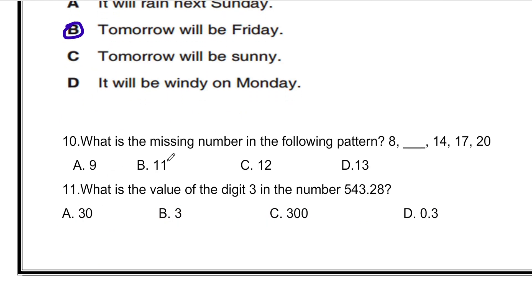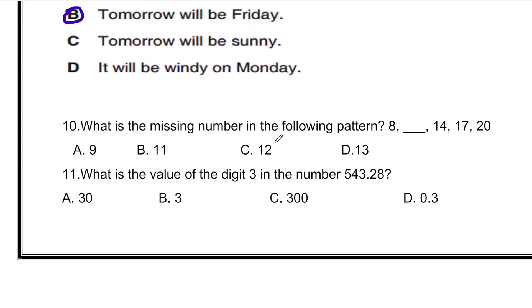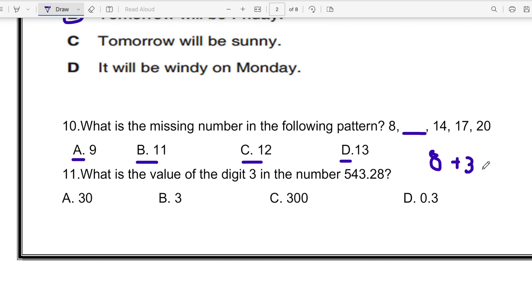What is the missing number in the following pattern? 8, 14, 17, 20. So we do not know what will come over here. We know it is 8, then 14. What is the missing number in the following pattern? 9, 11, 12, or 13. So 8 plus 3 equals 11. Now let's plus 3 to 11.